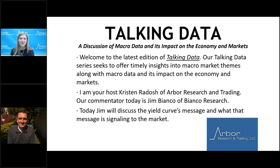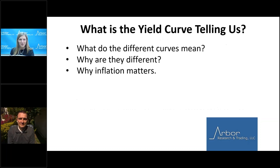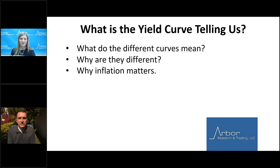Today, Jim will discuss the yield curve message and what it is signaling to the market. At the time of this recording, the two-year, ten-year yield curve has inverted for the first time since 2019. Jim explains that the curve inverted just 13 days after the Fed's first rate hike — far and away the fastest ever. In 2019, it took nine rate hikes; in 2005, it took 15 of 17 rate hikes before inversion.